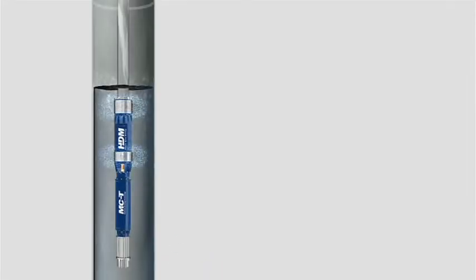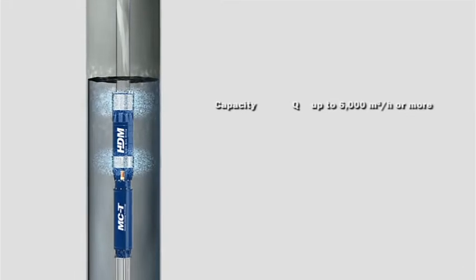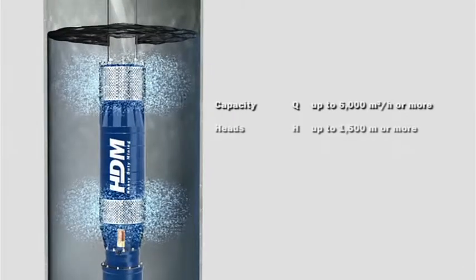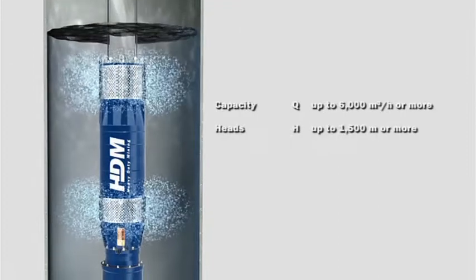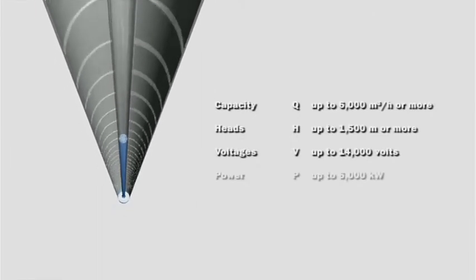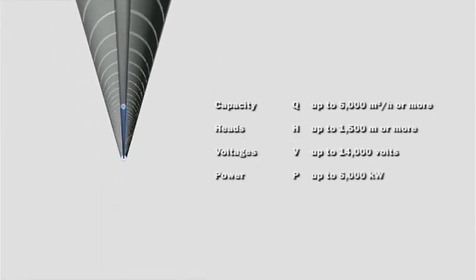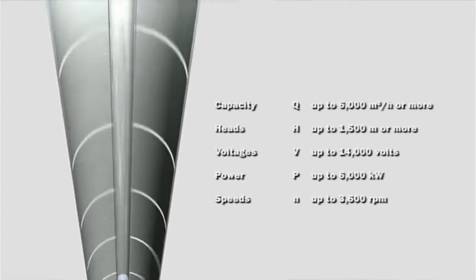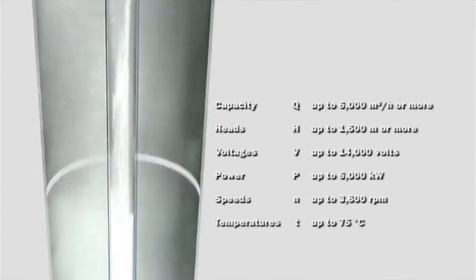The key benefits include capacity of up to 6,000 cubic meters or more per hour, head up to in excess of 1,500 meters, voltage up to 14,000 volts, power up to 6,000 kilowatts, speed of up to 3,600 rotations per minute, and temperatures up to 75 degrees Celsius.